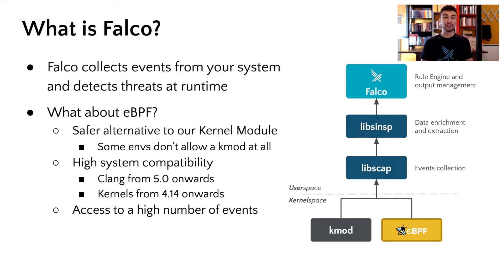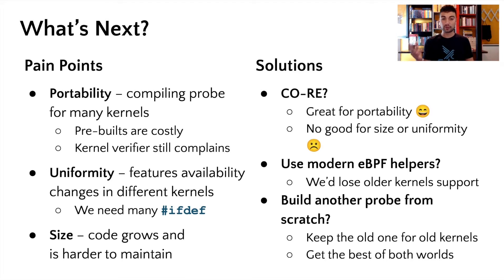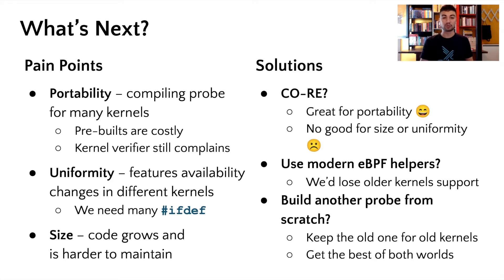However, all that glitters is not gold. There are indeed some pain points with our current eBPF probe. First, it's very hard to guarantee portability across many compiler and kernel versions. To mitigate compilation issues, we provide a high number of pre-built probes for many kernel versions, but that's quite expensive in terms of storage and can't possibly cover all cases. Plus, this doesn't save us from battling with the kernel verifier every now and then. Also, our code is not uniform. eBPF is gaining many interesting features, but those are not available in all kernel versions that Falco supports. So we are forced to either not adopt those features or enable them only on some kernel versions. This makes performance and compatibility quite unpredictable and also makes the code bigger in size and harder to maintain.